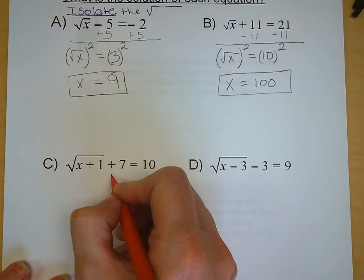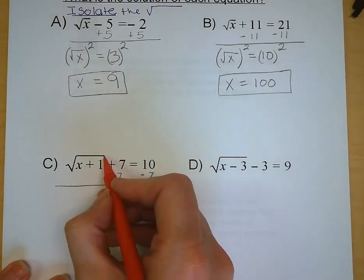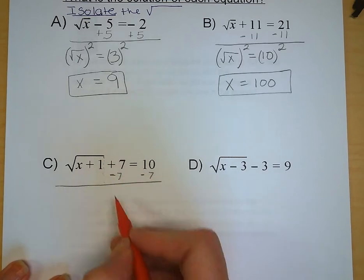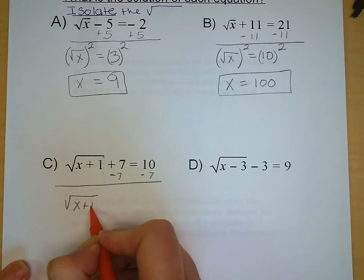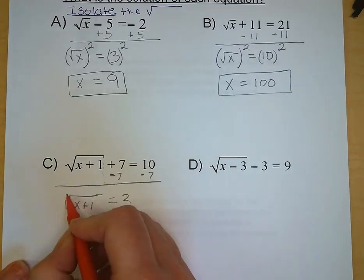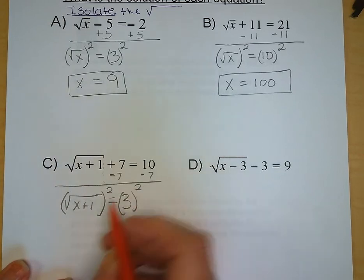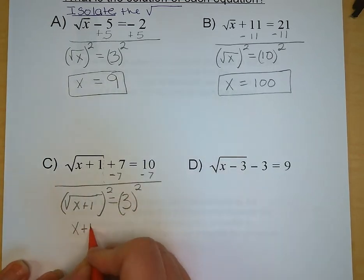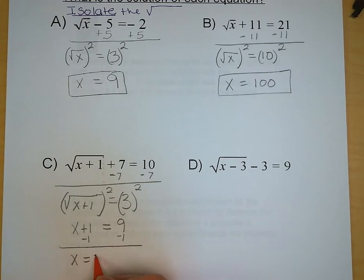Letter C. We have more than one operation going on underneath the radical, but we're still going to follow the same process. Subtract 7 from both sides and the square root of x plus 1 is equal to 3. Now we're going to square both sides of our equation. Our radical sign cancels out, so we're left with x plus 1 is equal to 9. Subtract 1, and x equals 8.